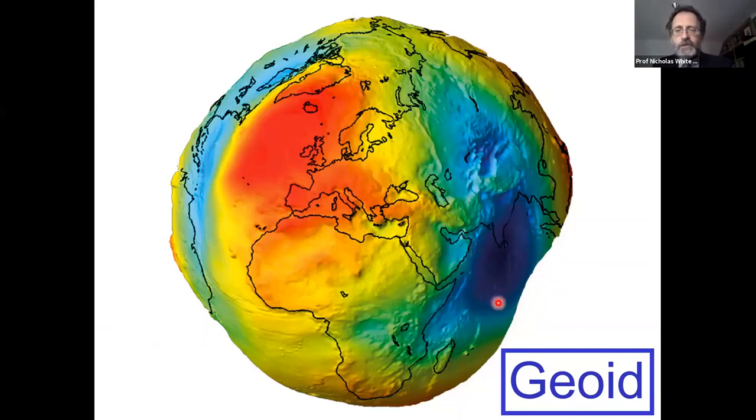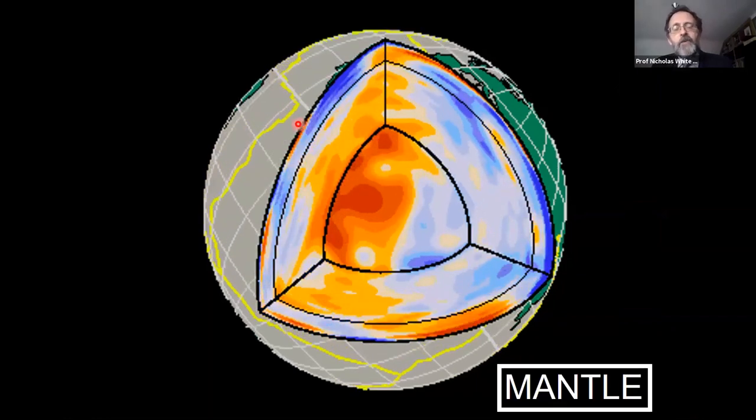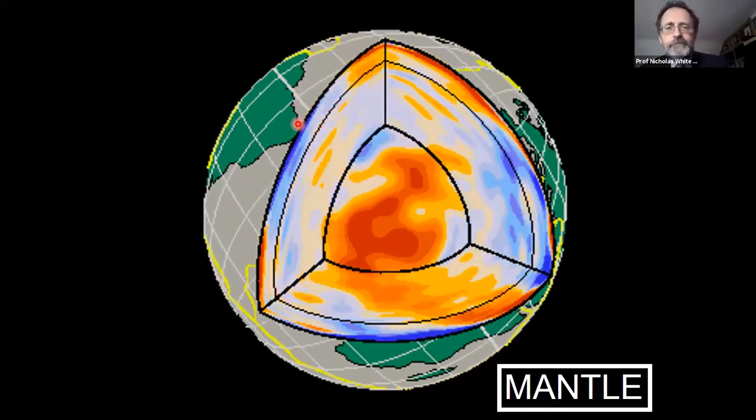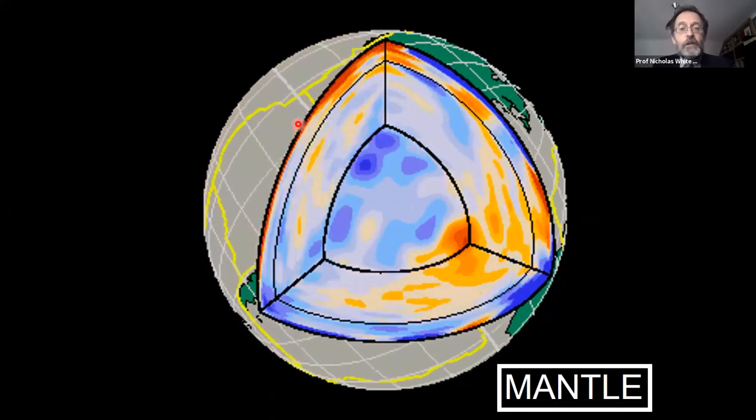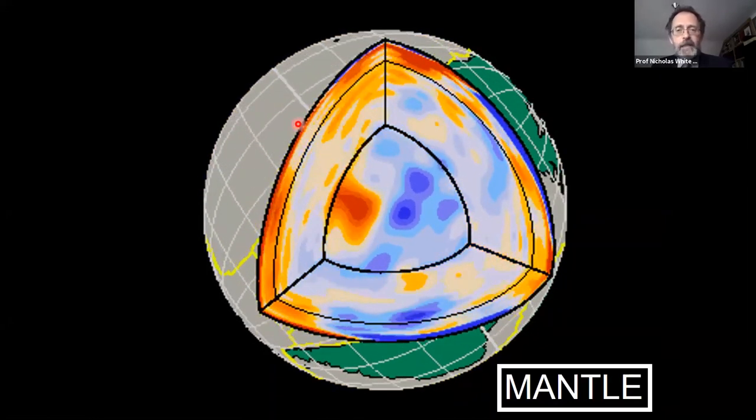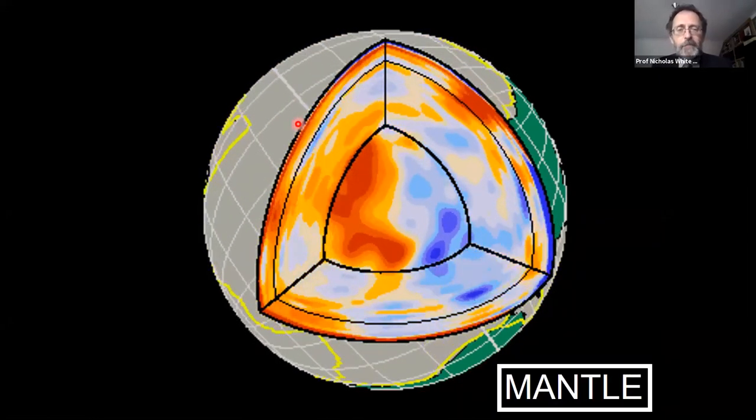One consequence of Stokes flow about density anomalies within the mantle is the geoid, which is the shape the Earth has if it was a fluid body. The shape of the geoid is quite irregular, like a knobbly multicolored potato. You can see major geoid depressions such as that south of India and a major geoid high centered on Iceland.